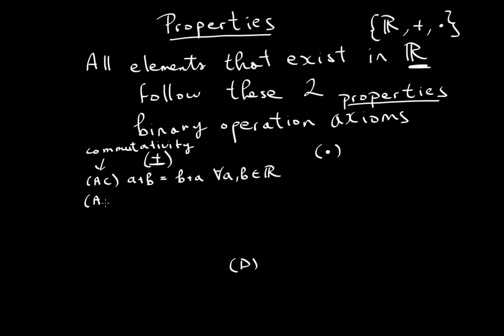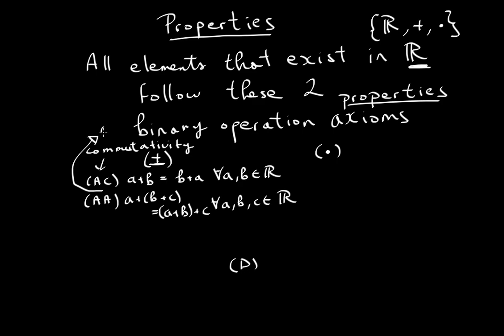The second property is additive associativity. These are just properties — think of them as adjectives describing how numbers behave. Additive associativity says A plus B plus C is the same as A plus (B plus C), for all A, B, C which are elements of the reals.